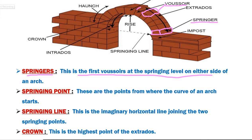The next definition is springing point. Springing points are the points where the curve of an arch starts. In this image, we can see the points where the curve of an arch starts.